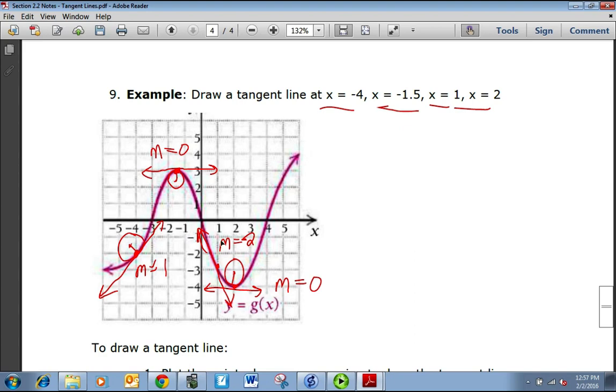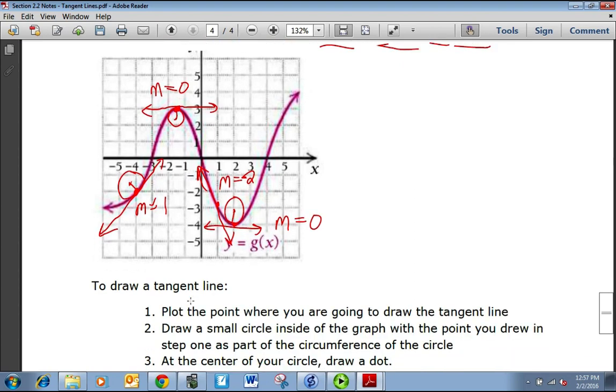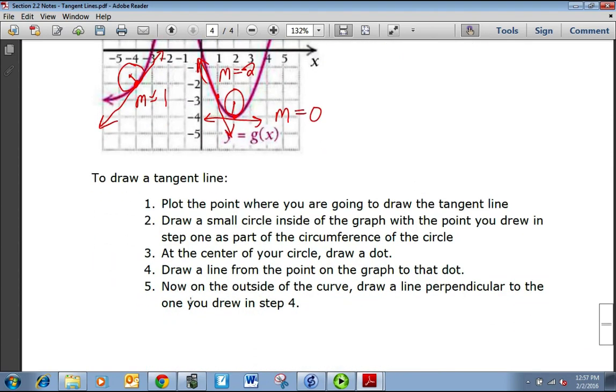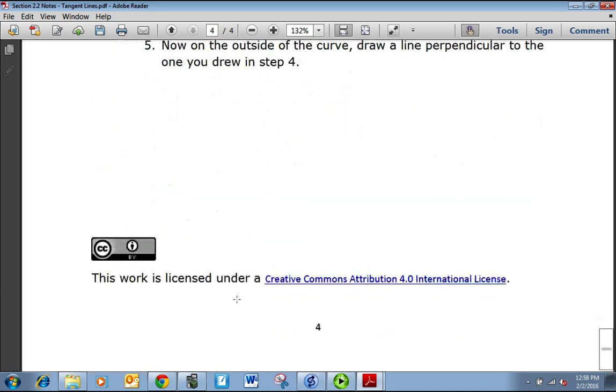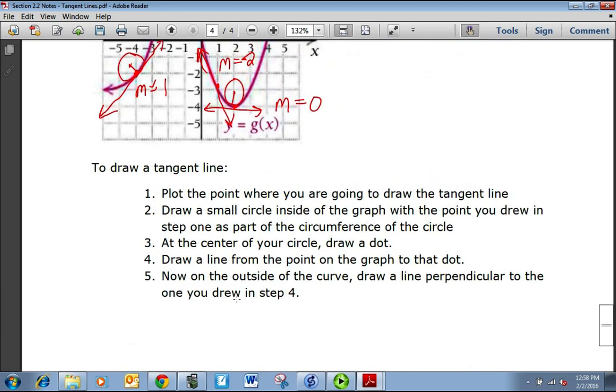So to draw a tangent line, here are the instructions. You're going to plot the point where you're going to draw the tangent line. Draw a small circle inside the graph at the point you drew in step one as part of the circumference of the circle. And at the center of the circle, draw a dot. Draw a line from the point on the graph to that dot. Now on the outside of the curve, draw a line perpendicular to the one you drew in step four. And that's it for now. That's probably enough to get you started in thinking about tangent lines and thinking a little bit more about the limit process.